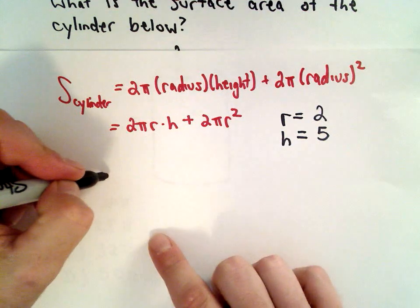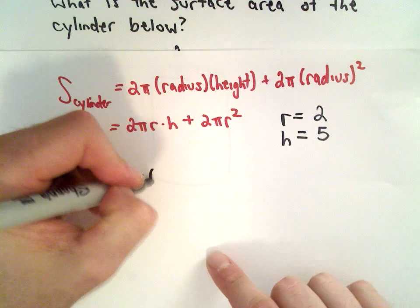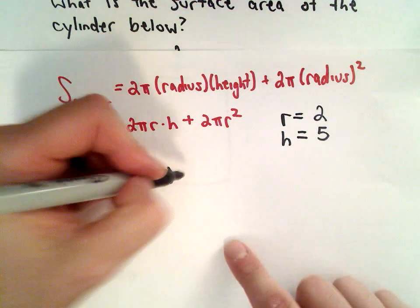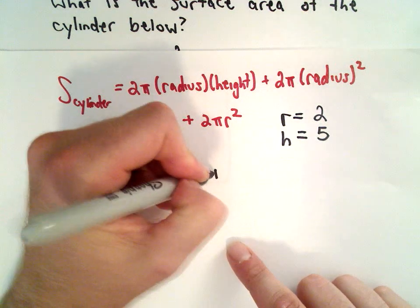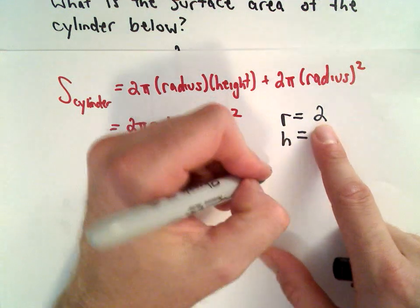We're just going to drop those values into our formula and simplify. So again, the radius is equal to 2, the height is equal to 5, plus 2π multiplied by the radius squared. Again, the radius is equal to 2.